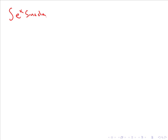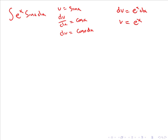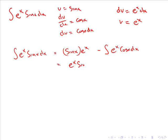Again I will pick u as a trigonometric term, so u equals sin(x). That means du/dx equals cos(x) and du equals cos(x) dx, and dv equals eˣ dx. Integrating we have v equals eˣ. So the integral of eˣ sin(x) dx equals u times v, so sin(x) multiplied by eˣ, minus the integral of v times du, so eˣ cos(x) dx. Tidying this up we have eˣ sin(x) minus the integral of eˣ cos(x) dx.